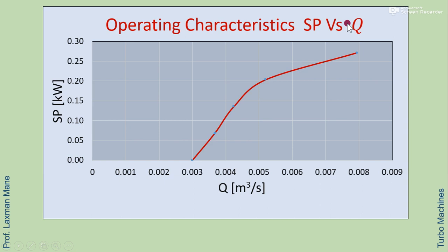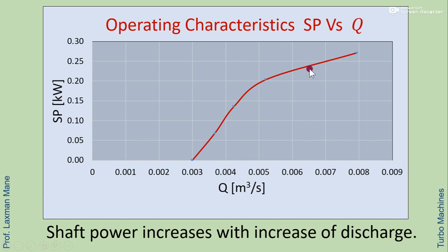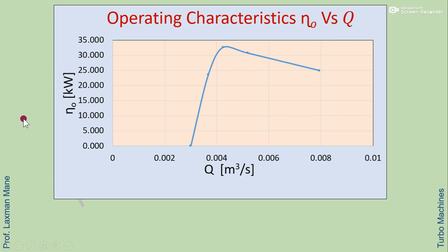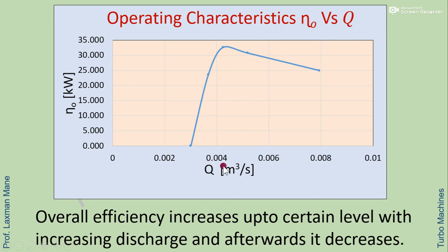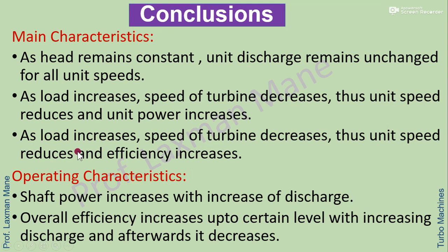From practical results, the shaft power curve shows that shaft power increases with increasing discharge values. For the overall efficiency curve, efficiency increases up to a certain level with increasing discharge and afterwards decreases. Conclusions for main characteristics and operating characteristics are summarized from these observations.